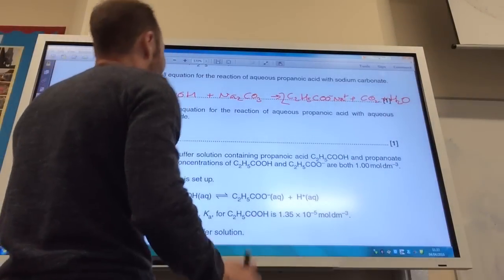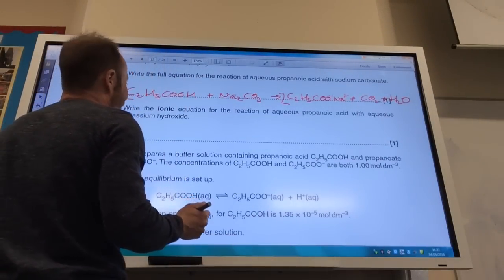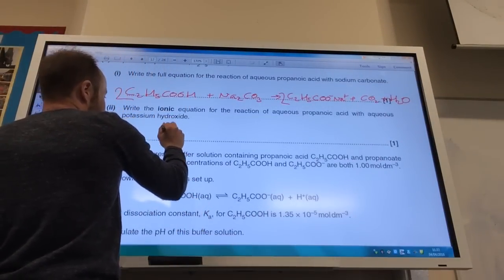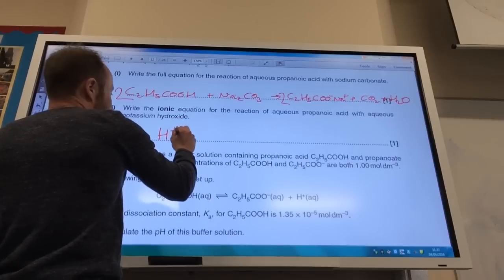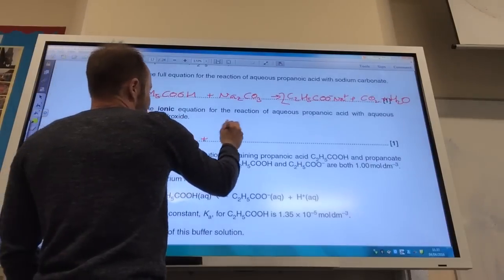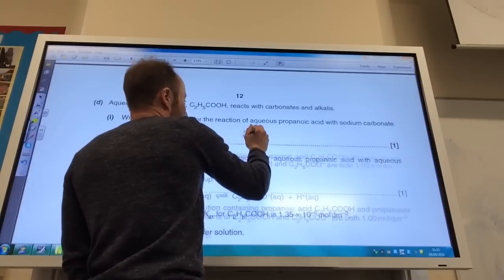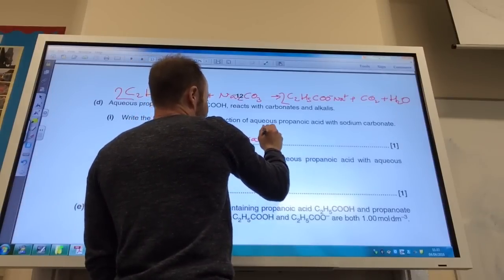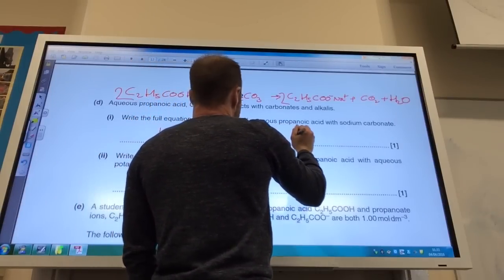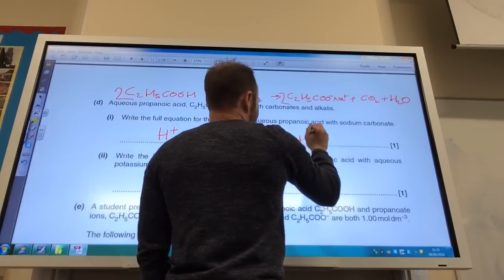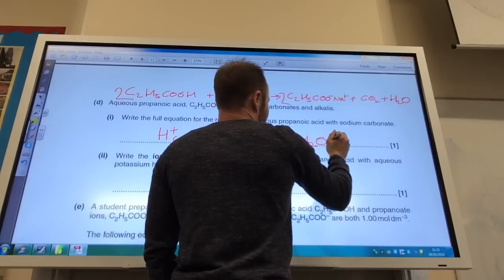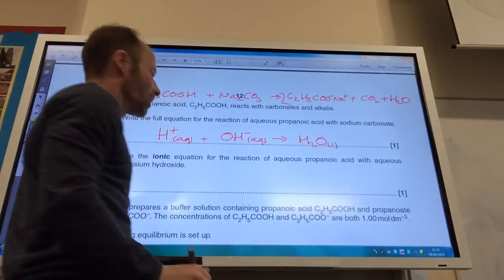The ionic equation for the action of propanoic acid with aqueous potassium hydroxide. This is your box standard one. H plus aqueous plus OH minus aqueous goes to give me water. Like so.